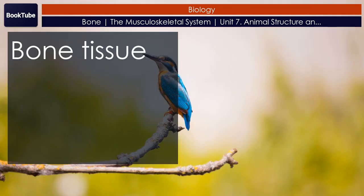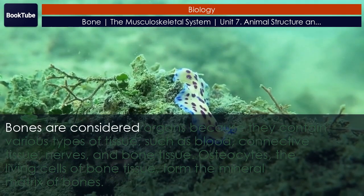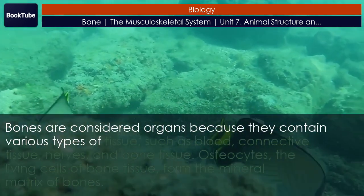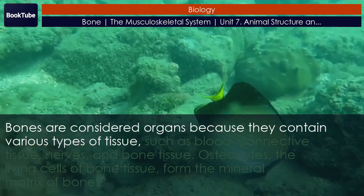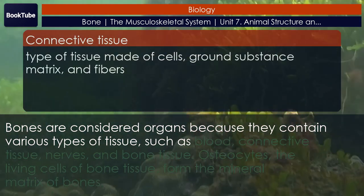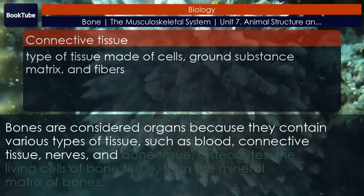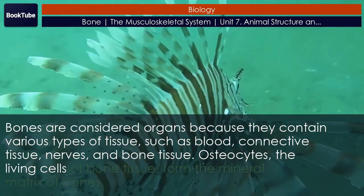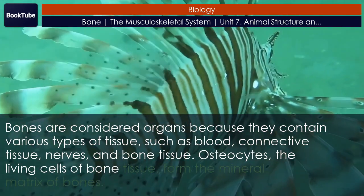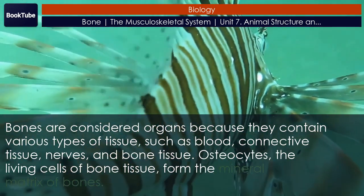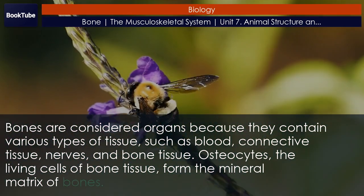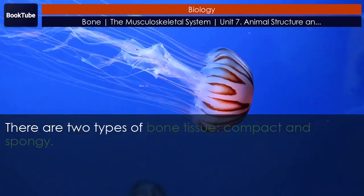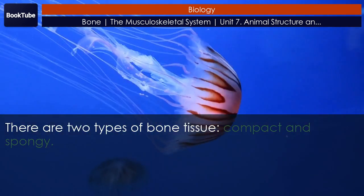Bones are considered organs because they contain various types of tissue, such as blood, connective tissue, nerves, and bone tissue. Osteocytes — the living cells of bone tissue — form the mineral matrix of bones. There are two types of bone tissue: compact and spongy.